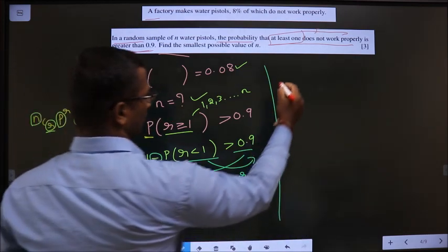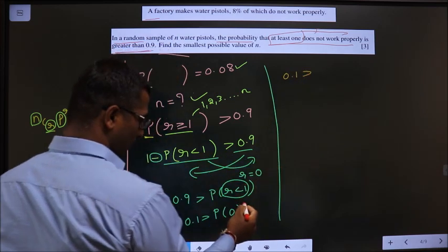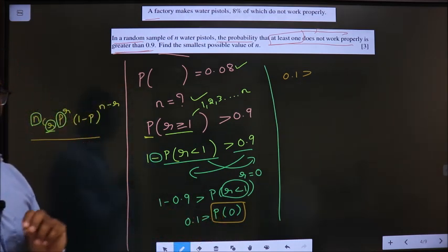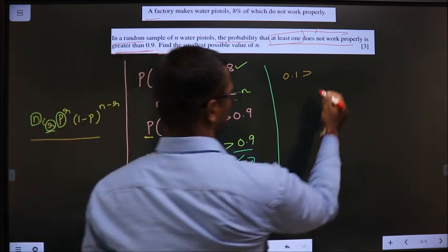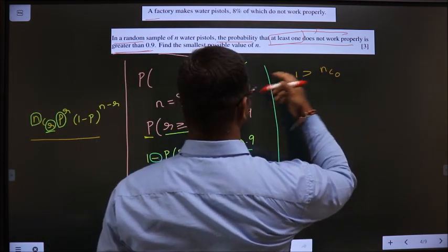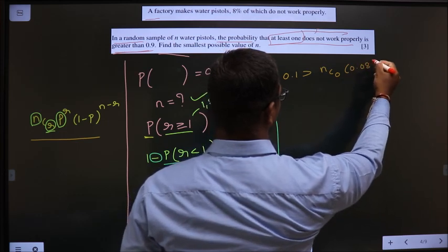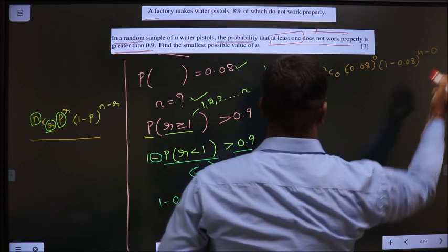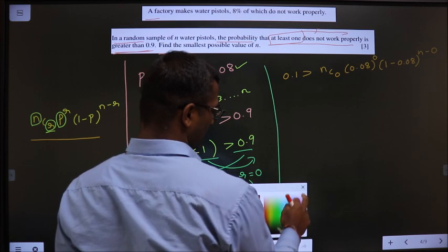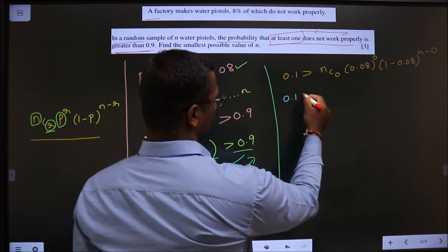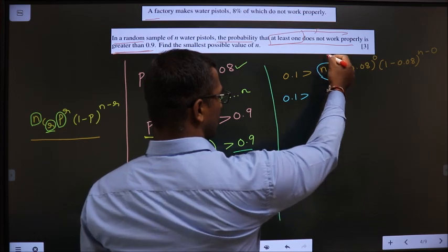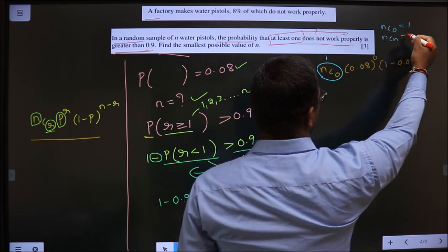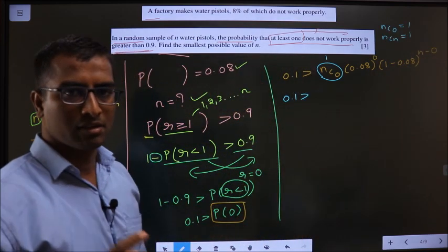Is it understood so far? Now. 0.1 greater than. Here r is 0. So replace r equal to 0 in this formula. What do we get? nC0. p is 0.08. Power 0. Into 1 minus 0.08. Power n minus 0. Okay. Now. See man, you should know that nC0 is 1. nC0 is 1. Even nCn is also 1. You should know that.